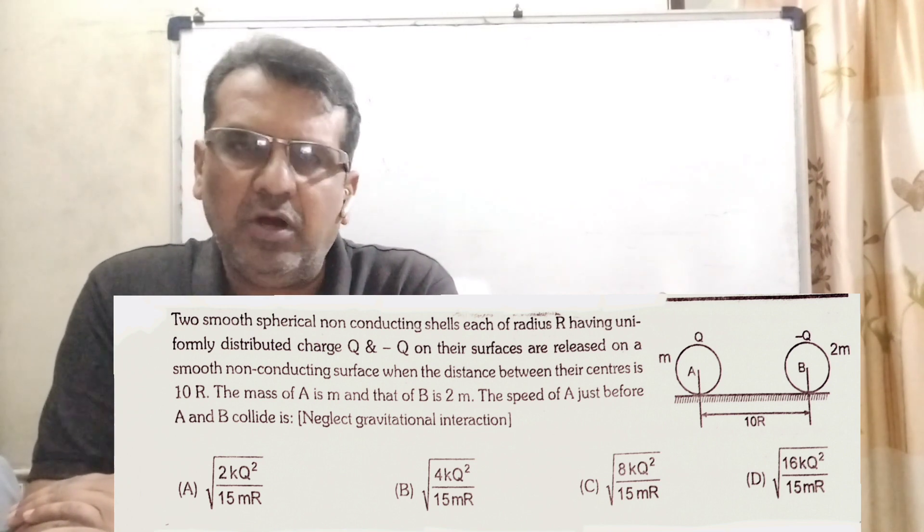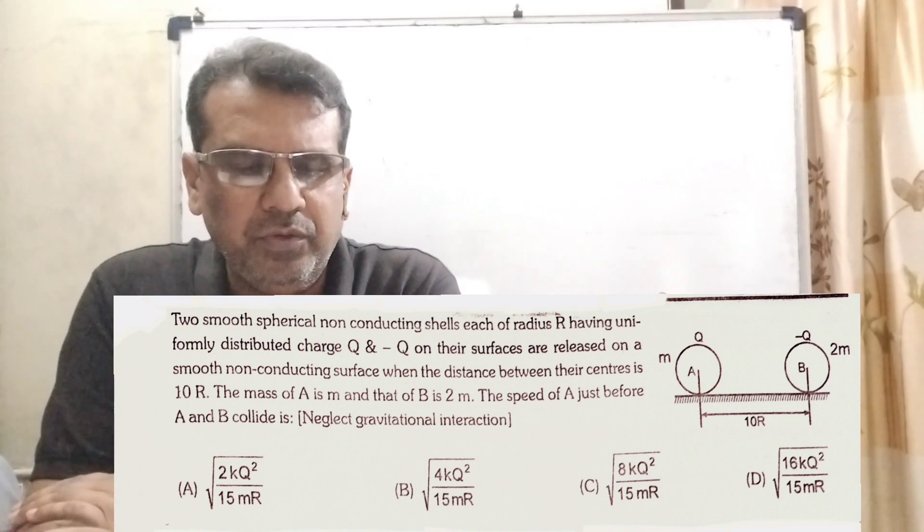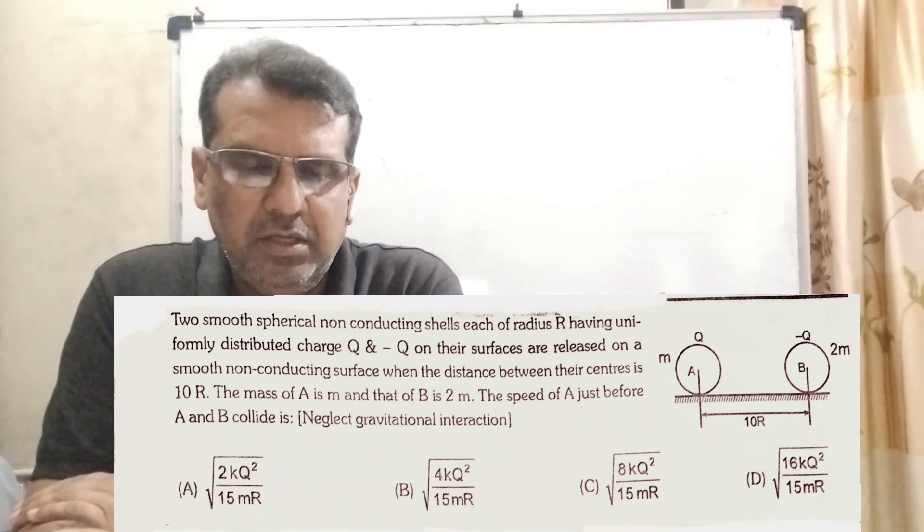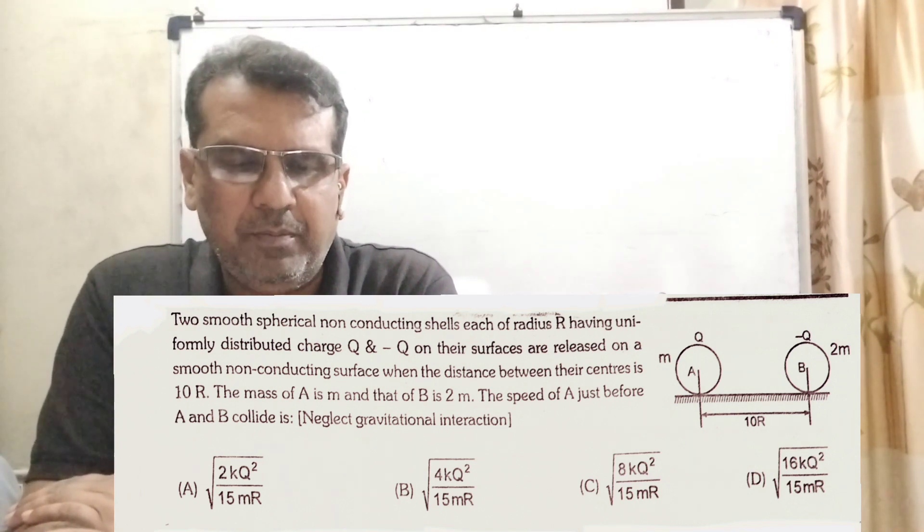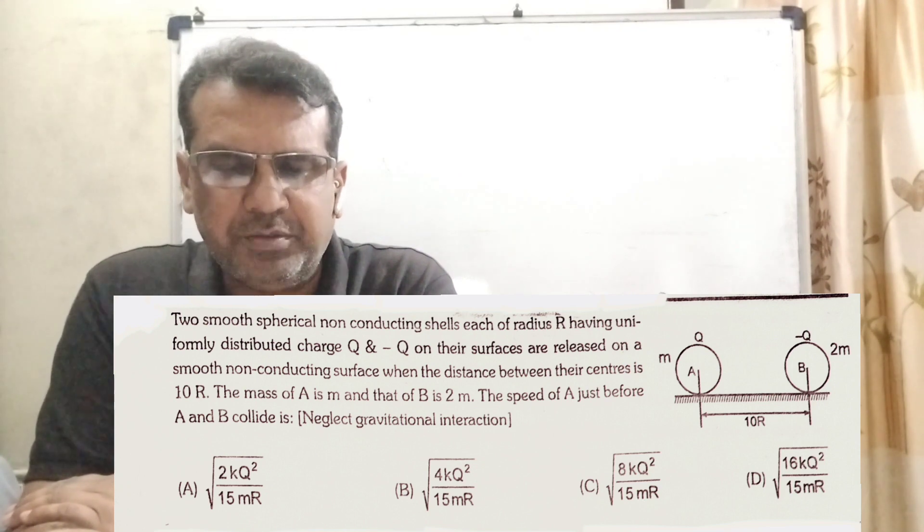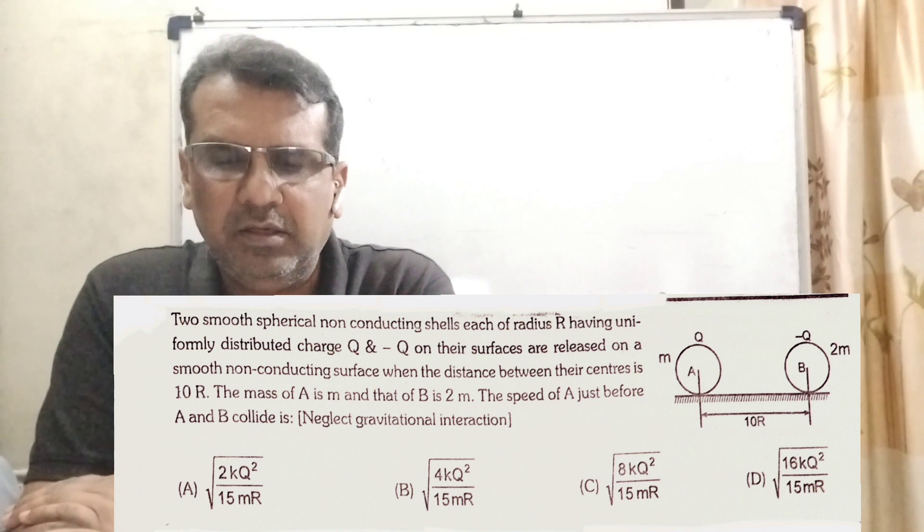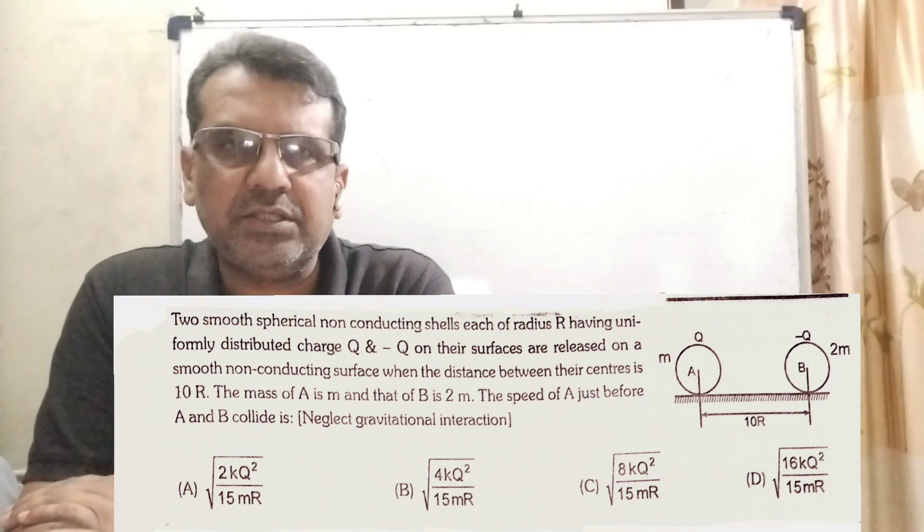We are given four options. Option A, root 2KQ square by 15MR. Option B, root 4KQ square upon 15MR. Option C, root 8KQ square upon 15MR. Option D, root 16KQ square upon 15MR.